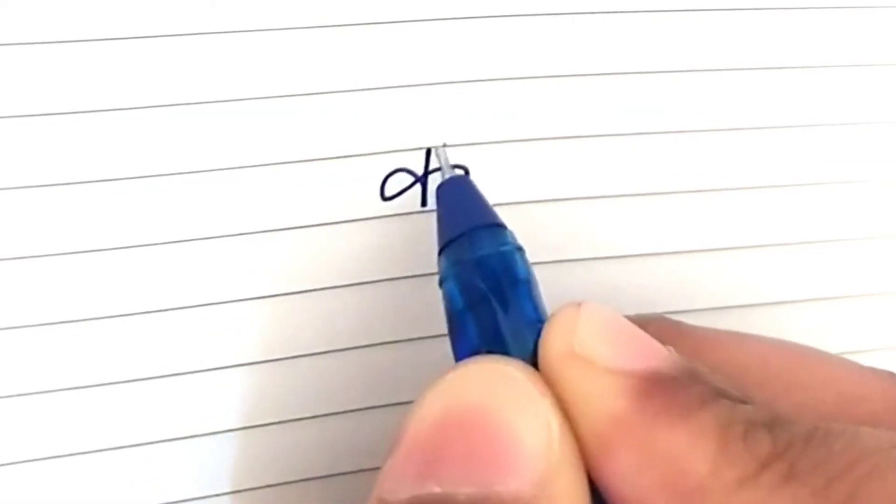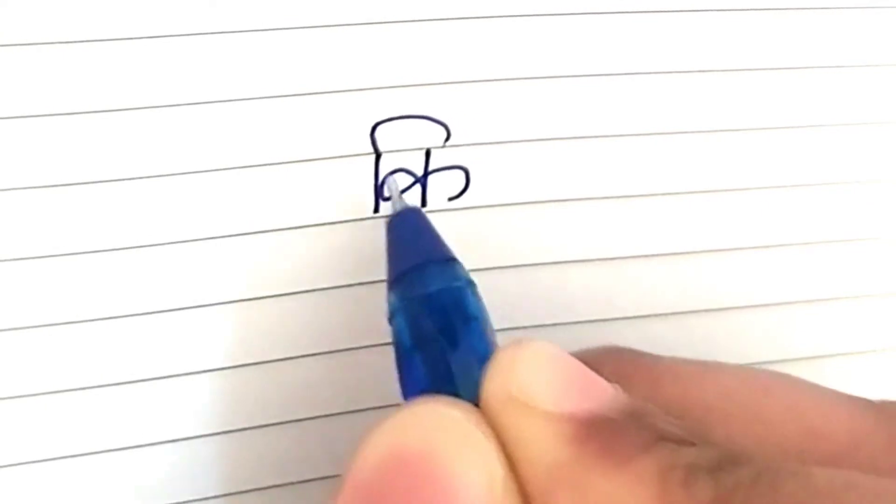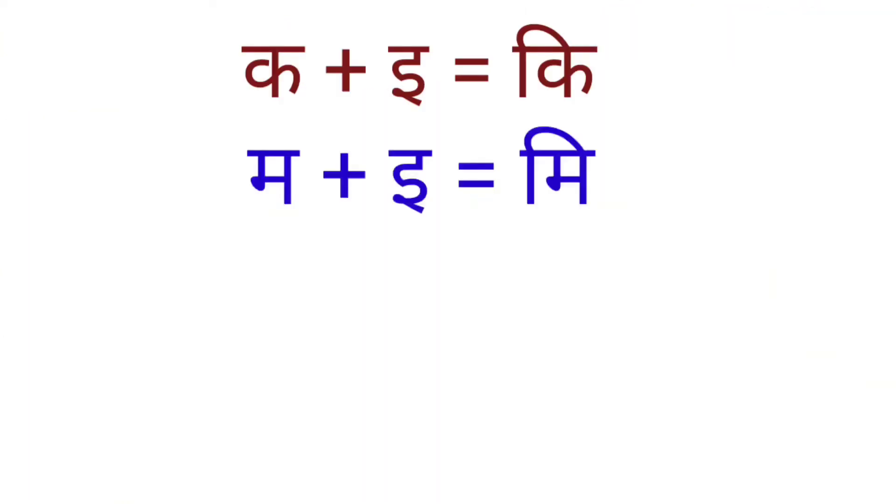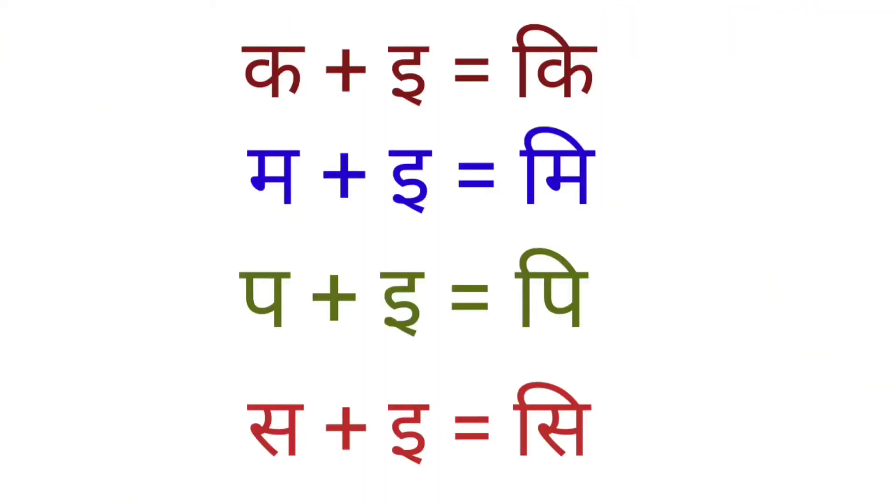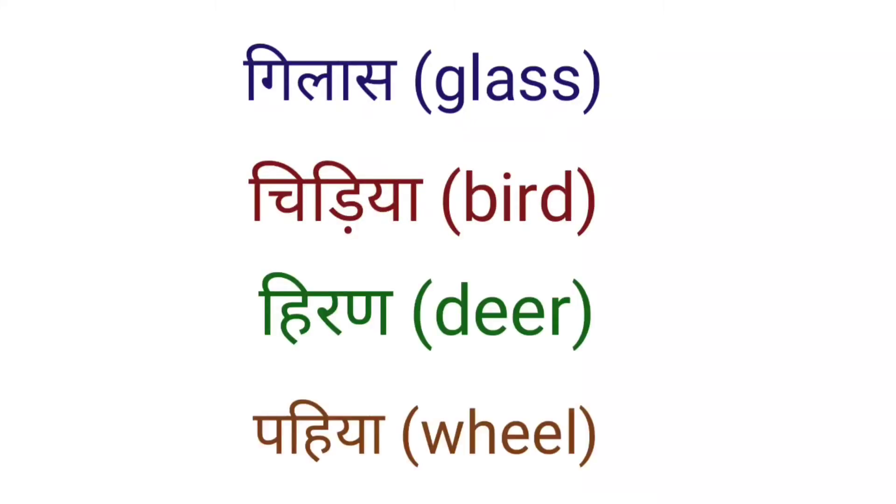Next vowel, I. This is the symbol for the sound. Ki, Mi, Pi, Si. Gilas, Chidiya, Hiran, Pahiyya.